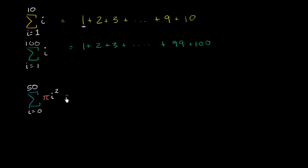Well, let's just go step by step. When i equals 0, this will be pi times 0 squared. And that's clearly 0, but I'll write it out, pi times 0 squared.